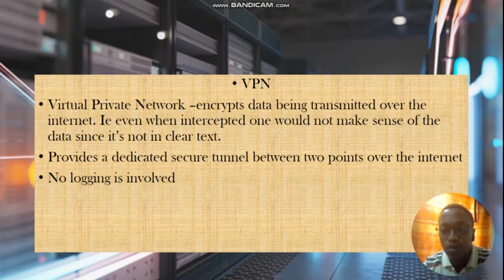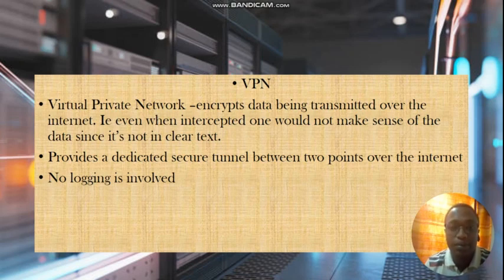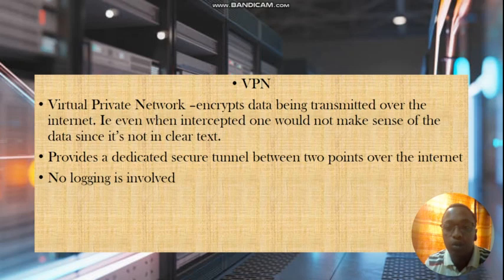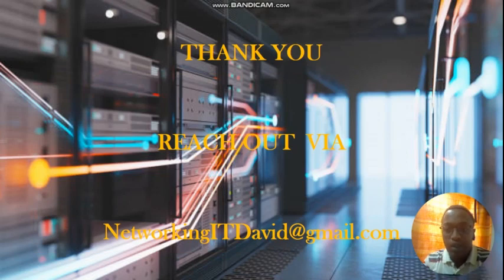A VPN is basically a connection created between a remote user and the server or network infrastructure they are accessing. A VPN encrypts data being transmitted over the internet — even if intercepted, one would not make sense of the data since it's not in clear text. It provides a dedicated secure tunnel between two points over the internet, and no logging is involved, so no records are kept of what data is going through a virtual private network. That's it for network components — thank you for joining me and see you in the next one.